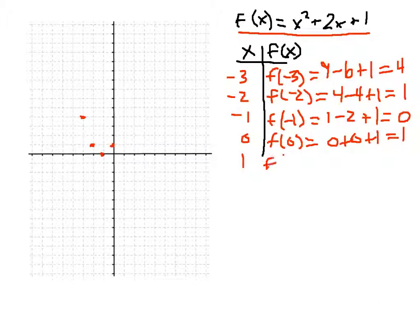And f of 1 will equal 1 plus 2 plus 1, which is 4. That will be (1, 4), right here. So we can see, if we were to connect these, that we will have a parabola, a U-shaped quadratic function.